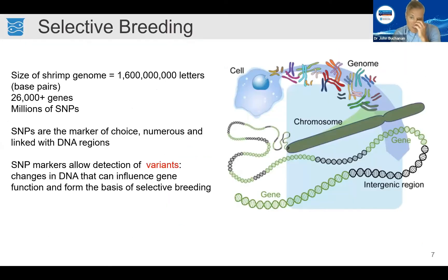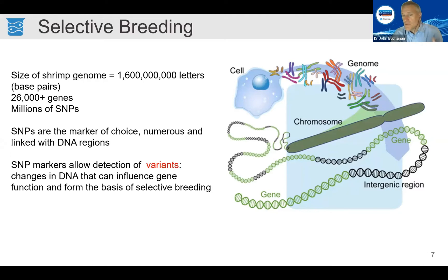Selective breeding takes advantage of this. The shrimp genome was sequenced recently. For perspective, it has 1.6 billion letters in the DNA and 26,000 genes. Of these, there are 10 to 15 million SNPs. Because they are relatively numerous, SNPs are the marker of choice and are frequently used to enhance genetic improvement in selective breeding programs.